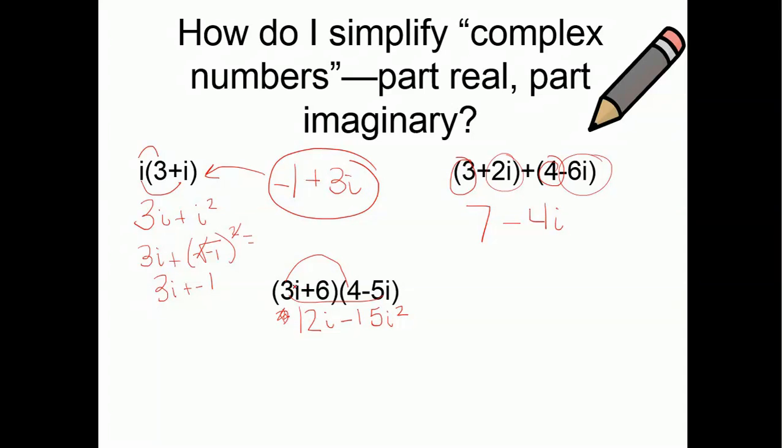What else can I multiply by? 6 times 4, that's a positive 24. And 6 times negative 5i is negative 30i. Now, let's combine some like terms. So, I got 12i and negative 30i. Well, I know that's negative 18i, right?